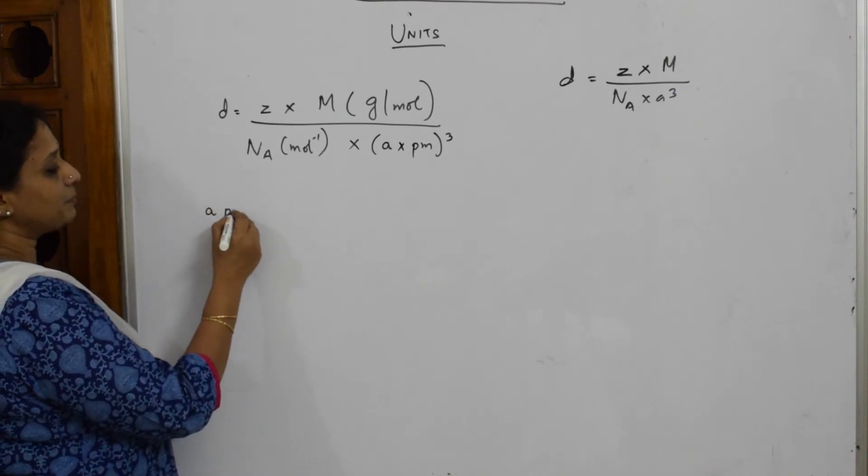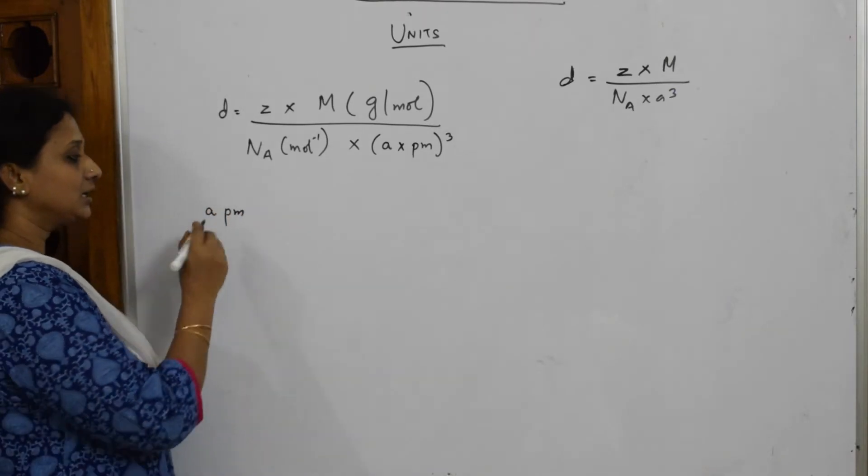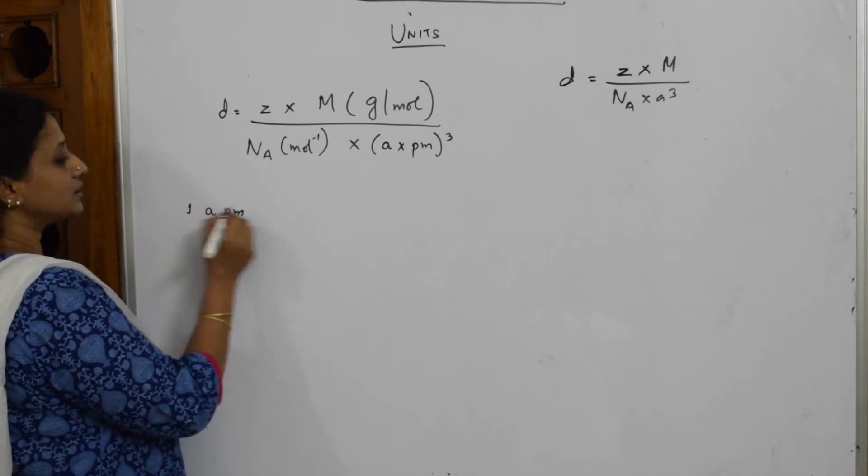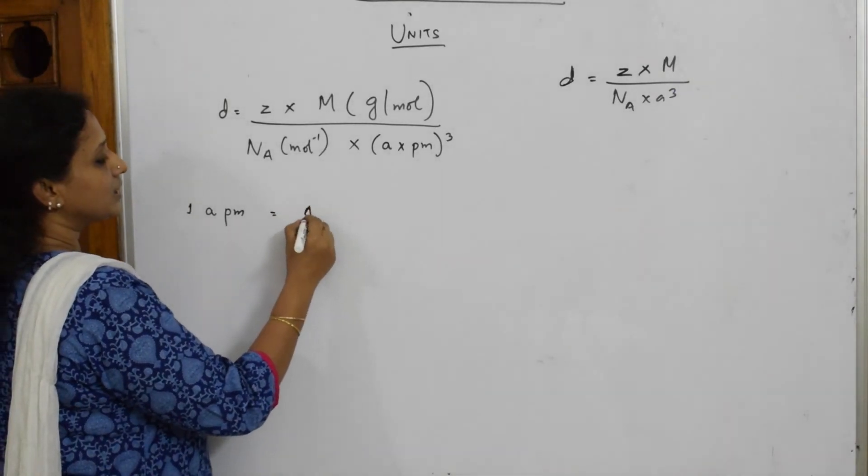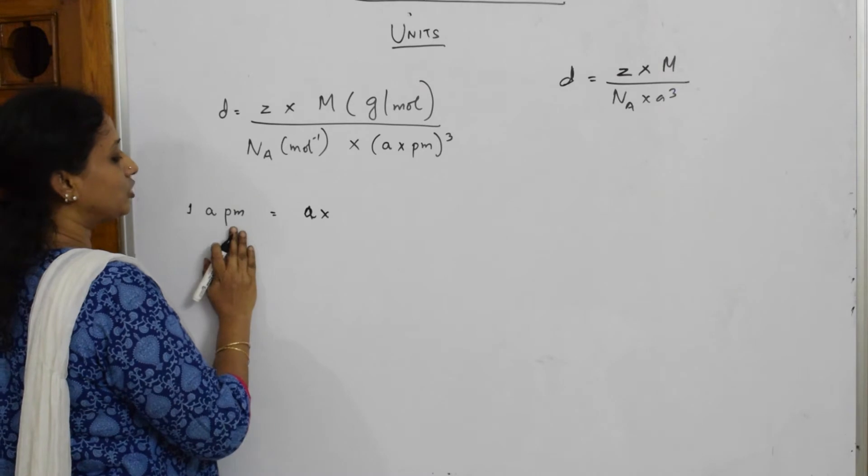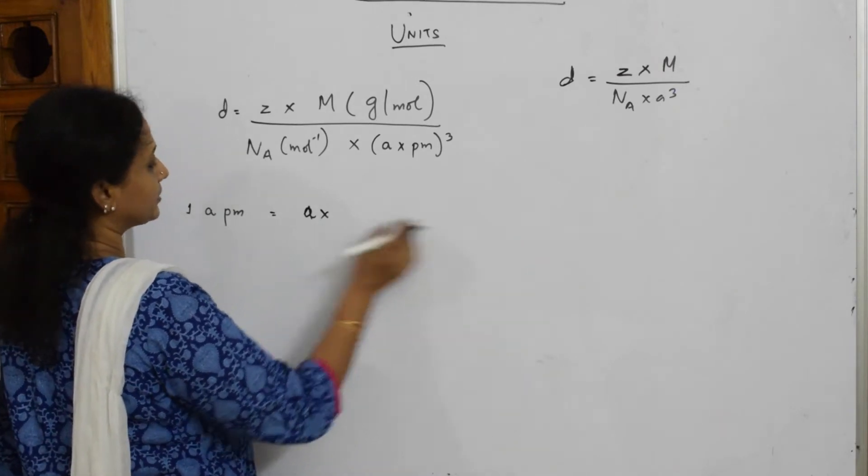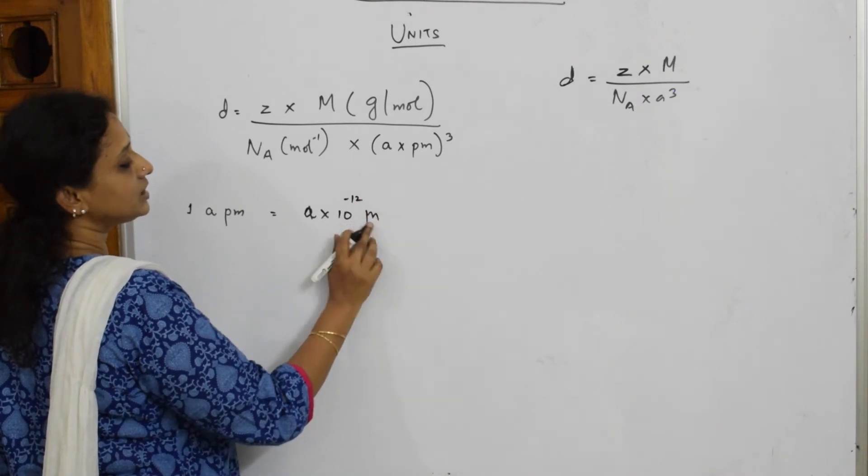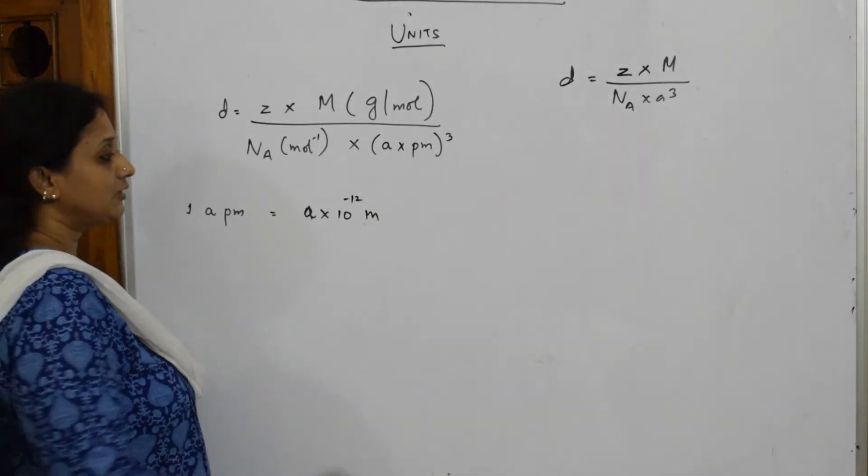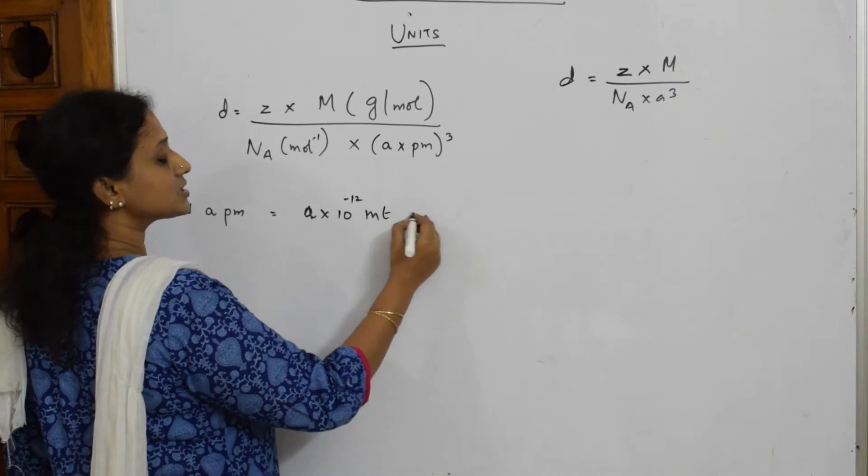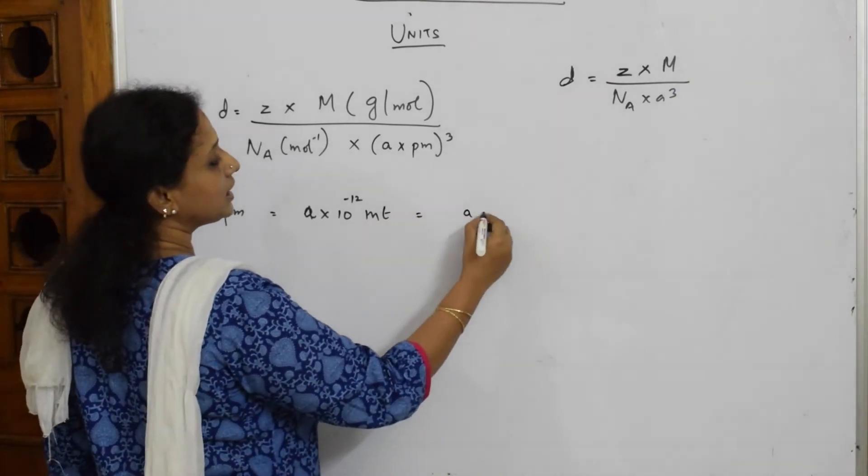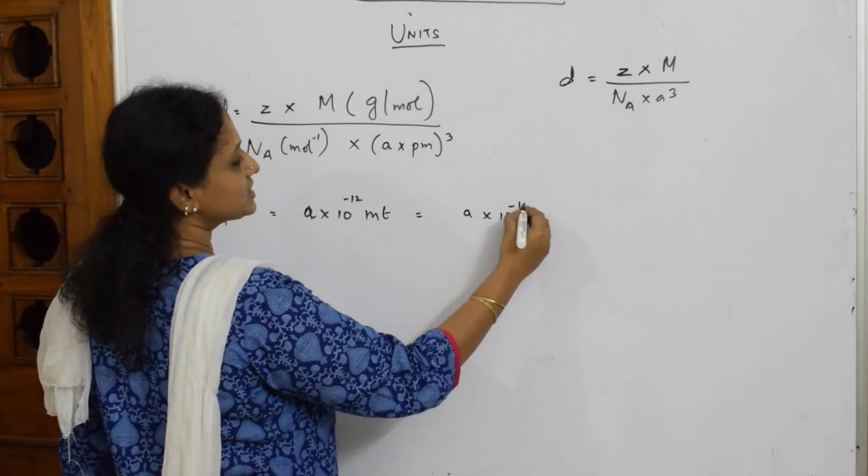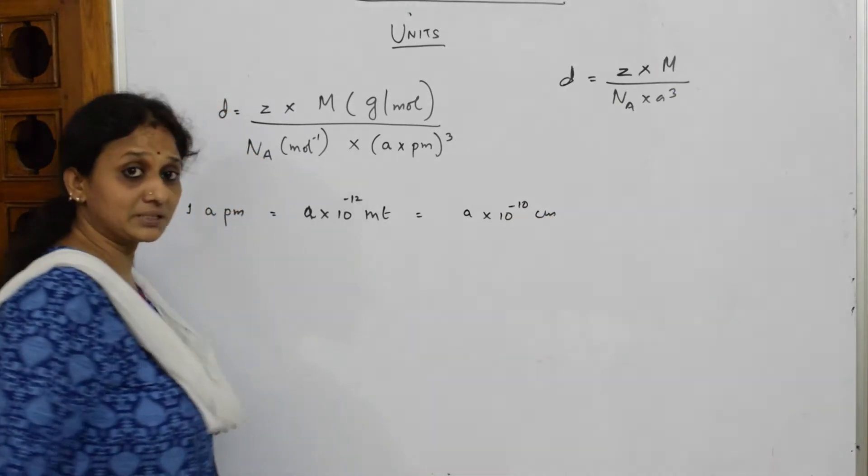One picometer is equal to A into 10 raised to minus 12 meter. If I have to further convert this into centimeter, A into 10 raised to minus 10 centimeter. Remember this.